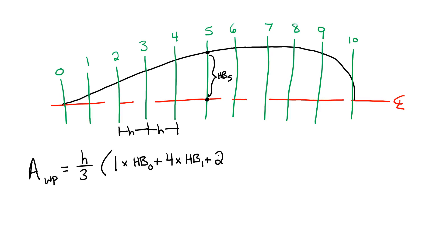Plus 2, which is my next Simpson's multiplier, by my half-breath at station 2. I go back to 4 for my multiplier, half-breath at 3, and it just continues on.